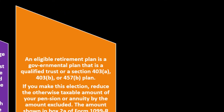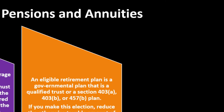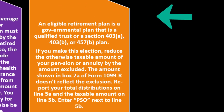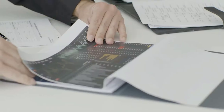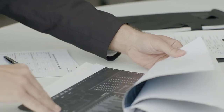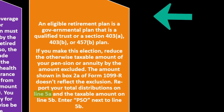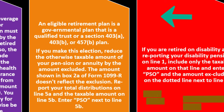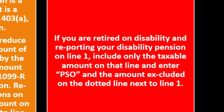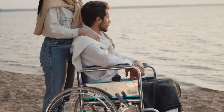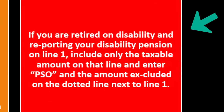If you make this election, reduce the otherwise taxable amount of the pension or annuity by the amount excluded. The amount shown in box 2A of Form 1099-R doesn't reflect the exclusion. Report your total distribution on Line 5A and the taxable amount on Line 5B, and enter PSO next to Line 5B. If you're retired on disability and reporting your disability pension on Line 1, include only the taxable amount and enter PSO and the excluded amount on the dotted line next to Line 1.